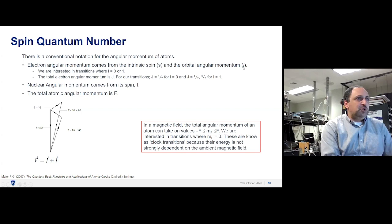The intrinsic spin, we label s, and it's one-half for an electron. The orbital angular momentum depends on its energy level. We're interested in transitions where L, the orbital angular momentum, is zero or one. You take the orbital angular momentum and the intrinsic spin, add them together to get the total electron angular momentum, called J. J can be one-half for L equals zero, or one-half and three-halves for L equals one.